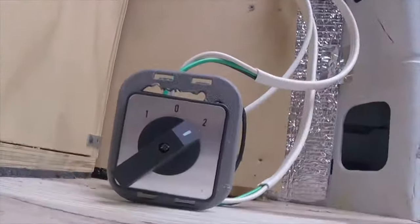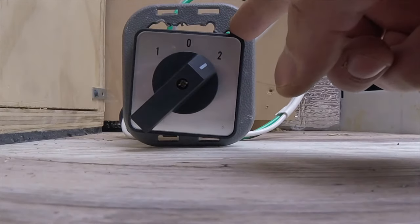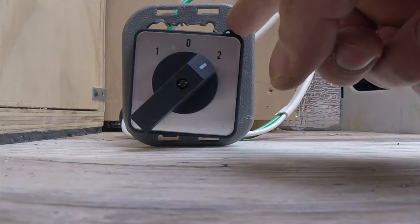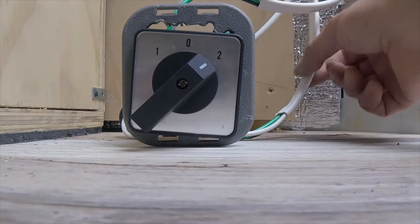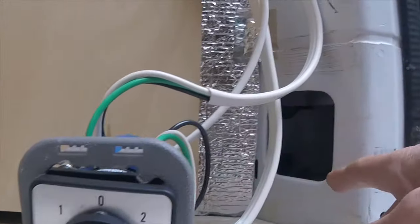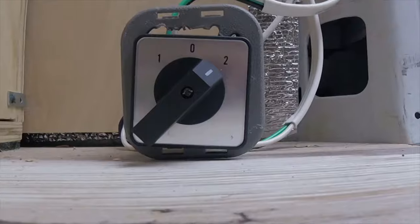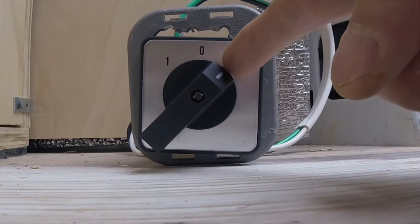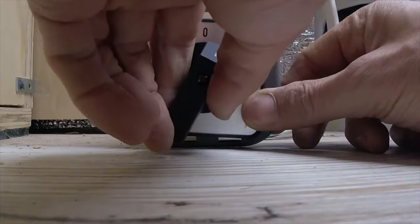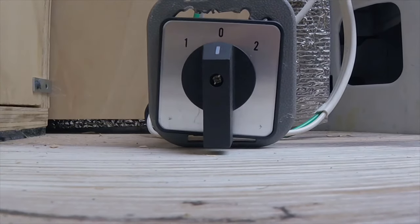So there you have it. This works pretty good. Now I can toggle back. I have my shore coming in. I'm going to mount this somewhere here or maybe in the hole. I haven't decided where I'm going to put it yet. But whenever it's on two, my battery charger is operating. And whenever I go back to one, my AC is being operated.